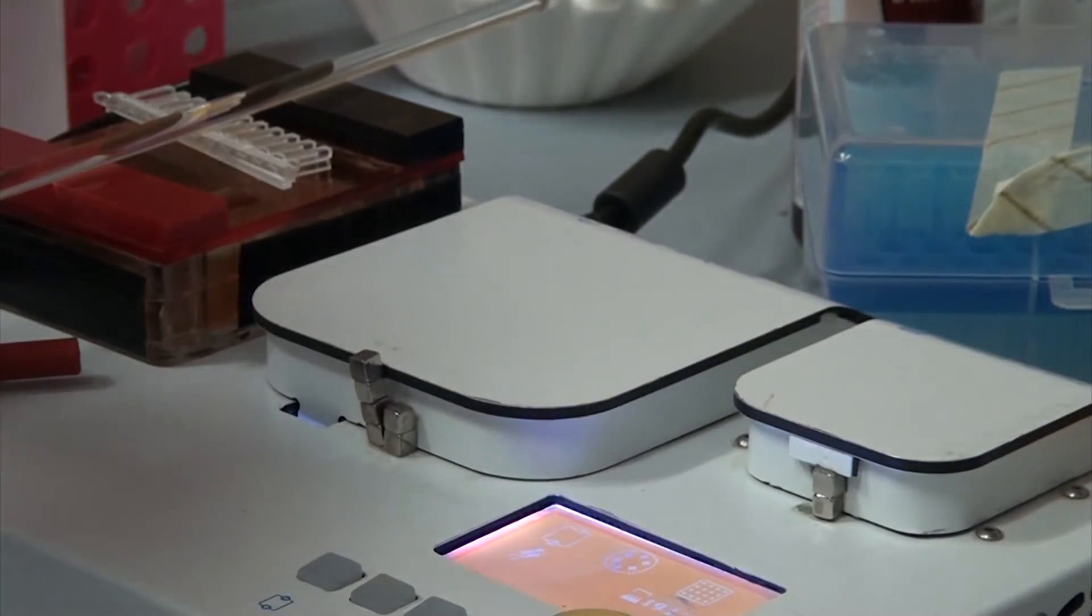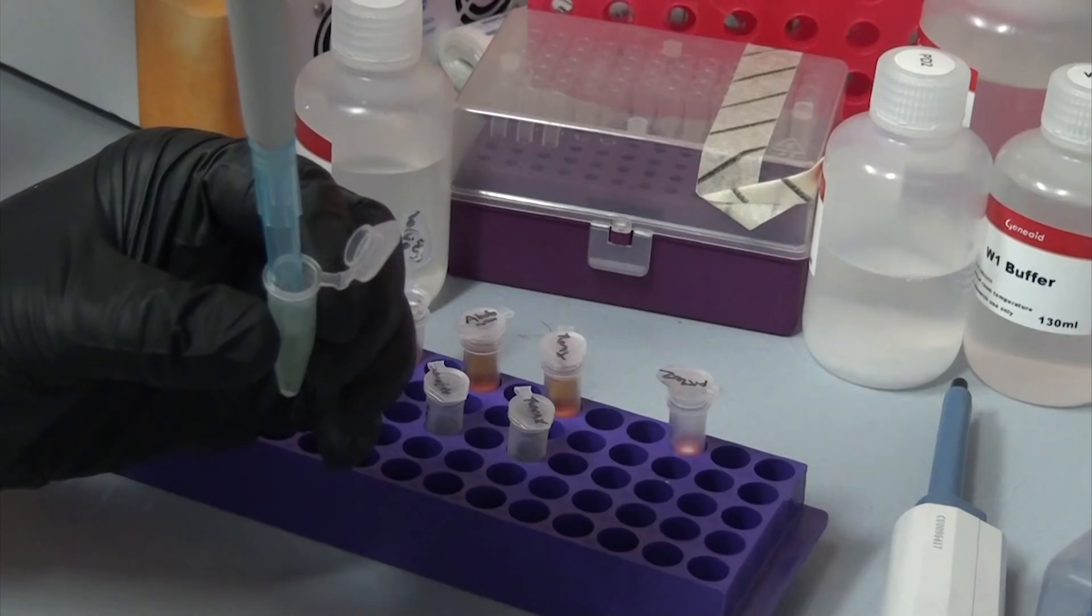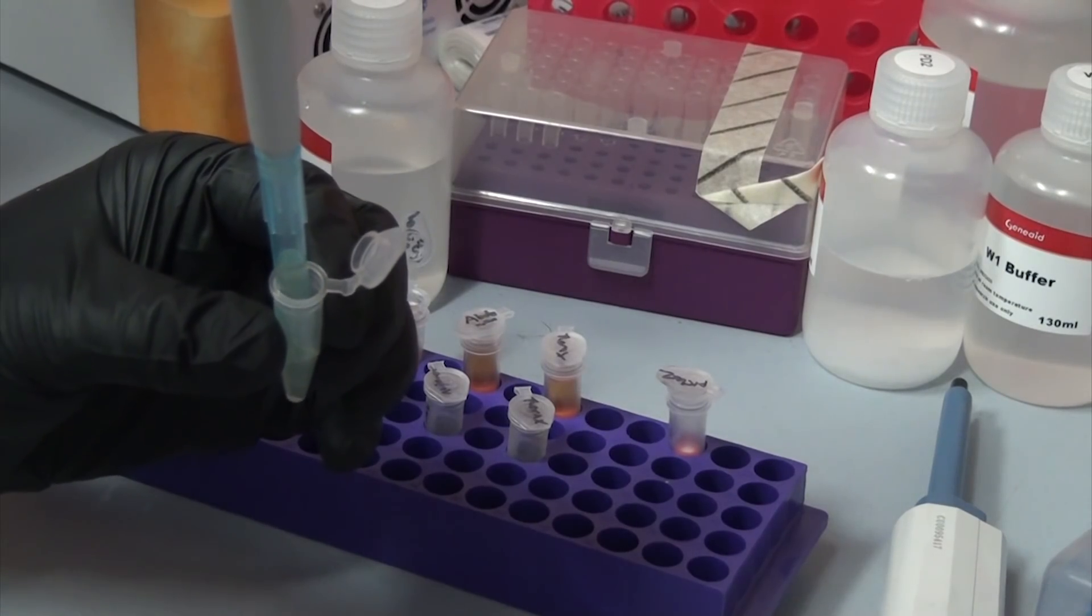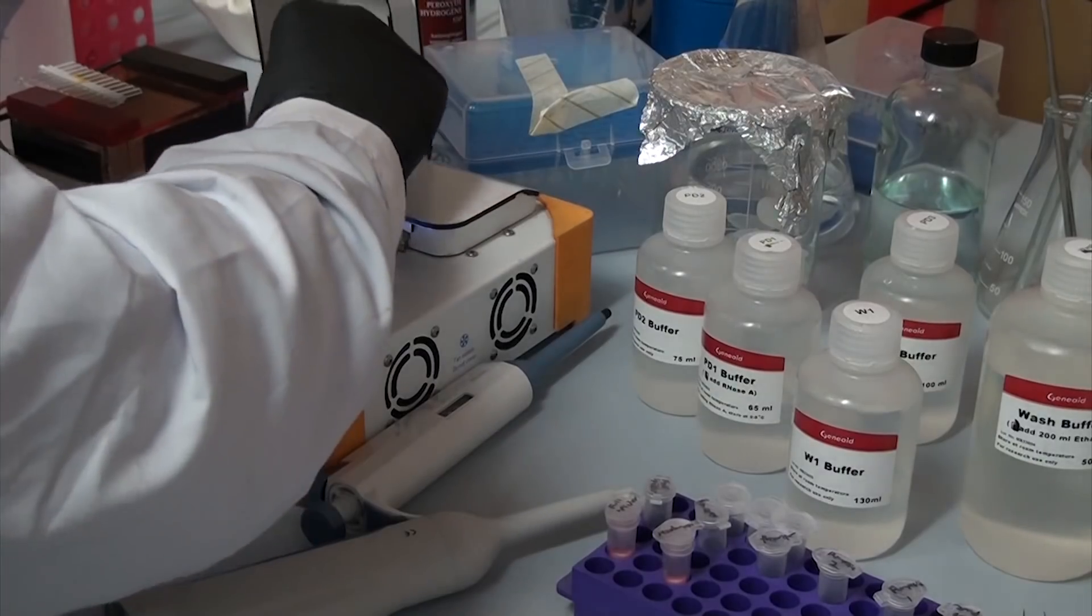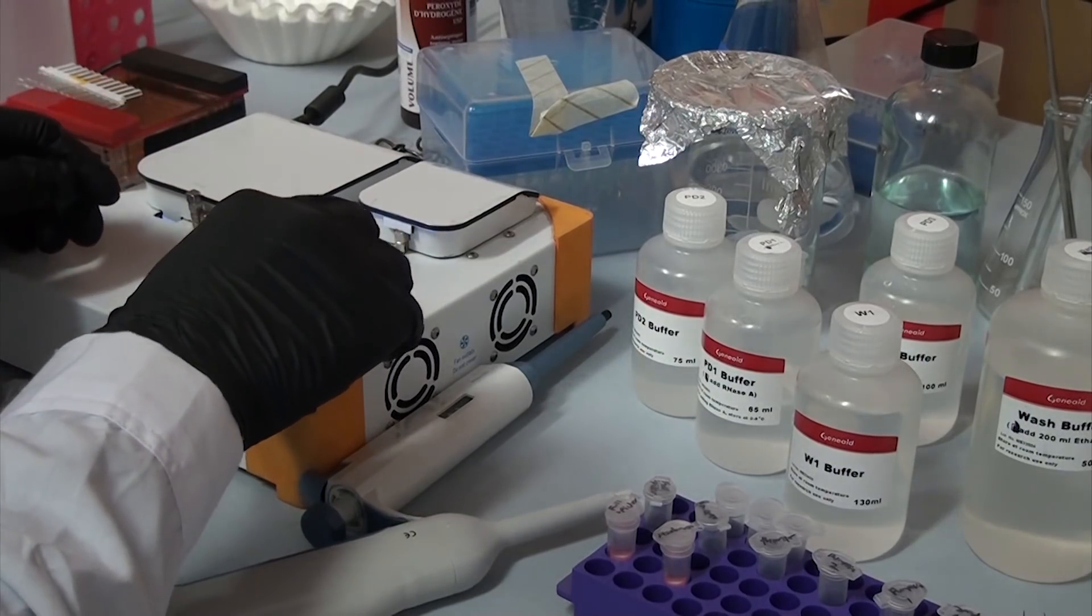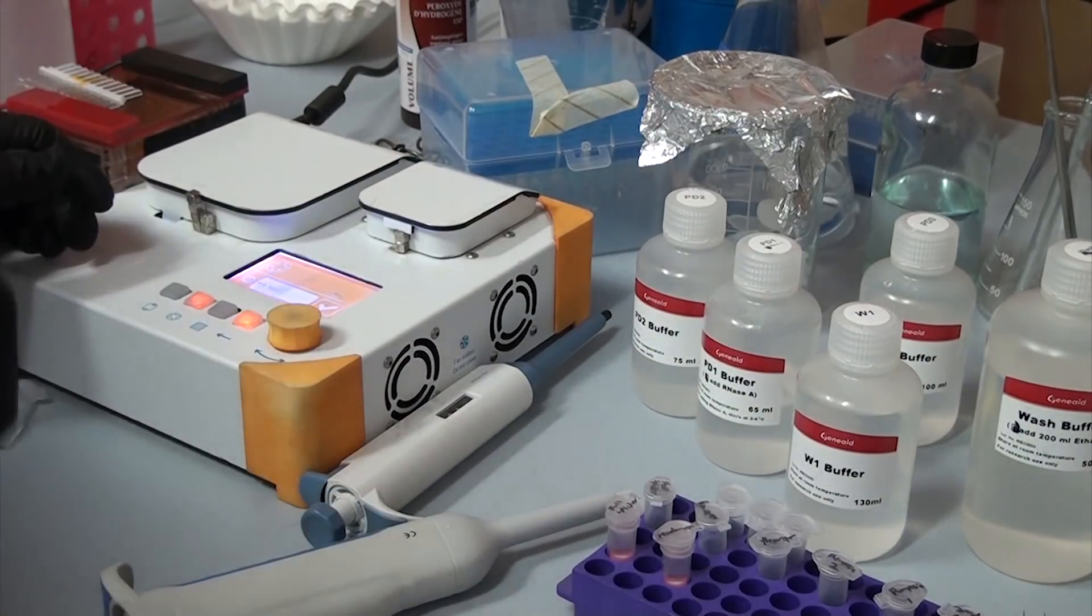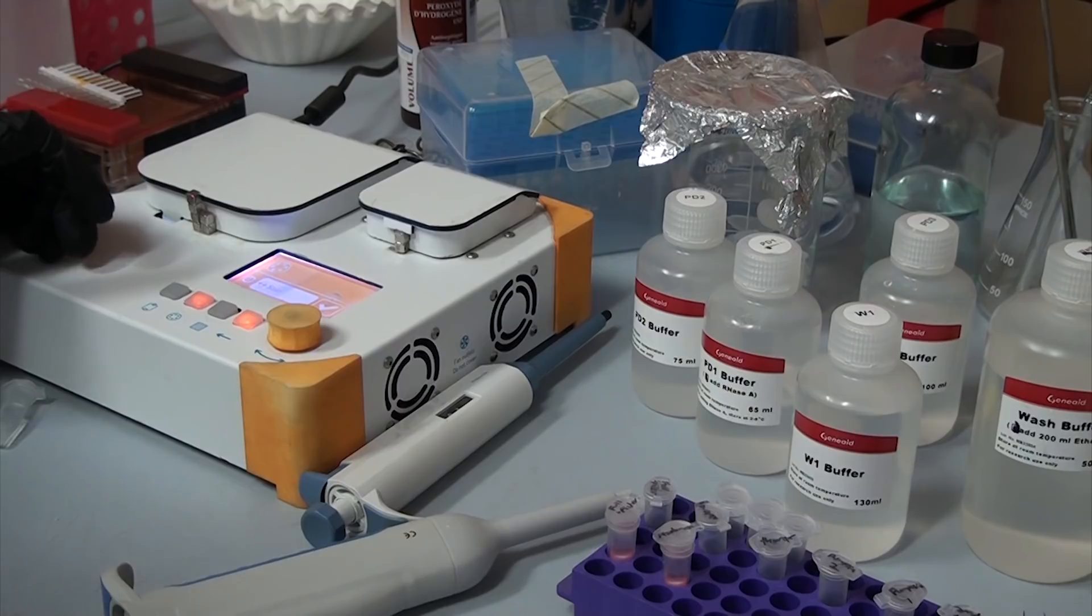On the day of the extraction, I first spun down this liquid to collect all the bacteria into a little pellet at the bottom. The LB was removed, and then it was onto the various buffers and solutions in the kit. The kit just labels things like PD-1, PD-2, and W1, which doesn't really tell you what's going on, but I was able to find some more info online.